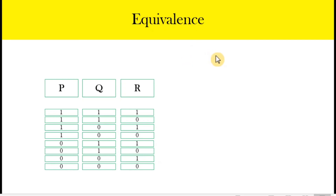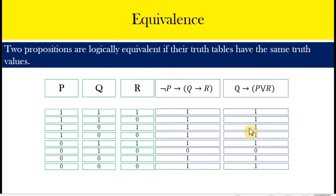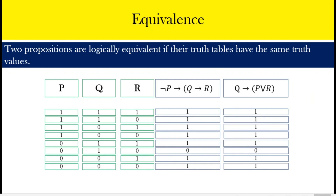The last topic is equivalence. Two compound propositions are equivalent if they have exactly the same truth values. We prepare their truth tables and compare — if they match, the two compound propositions are equivalent. Looking back at the last two compound propositions presented, they have exactly the same truth values for the same combinations of simple propositions, so we call them equivalent. If there is a single mismatch in the truth tables, that is enough to say the two propositions are not equivalent. This concludes our series on mathematical language and symbols — thank you for listening.